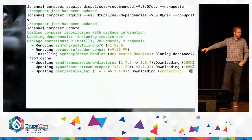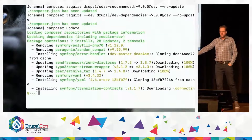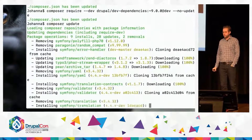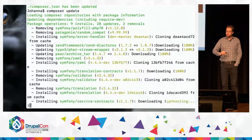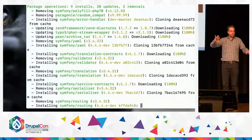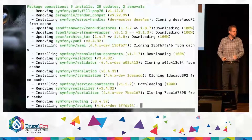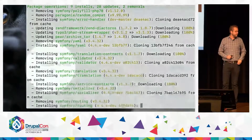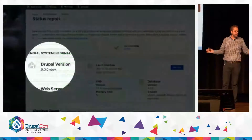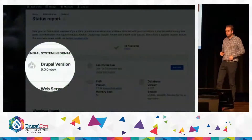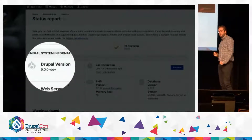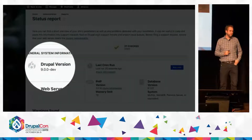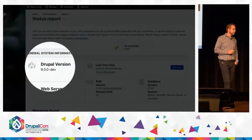We're upgrading to an alpha version of Drupal 9, which is also a little bit special. Here you can see Composer figuring out all of the new dependencies that Drupal 9 has relative to Drupal 8 and taking care of updating that. And after that's done, she's basically on Drupal 9.